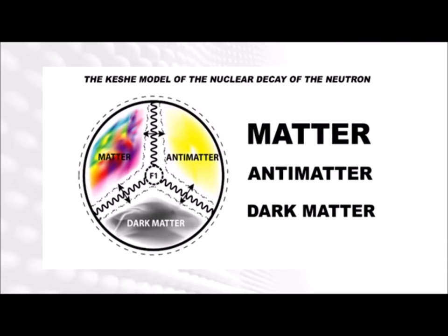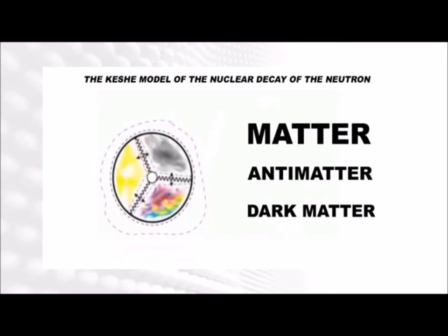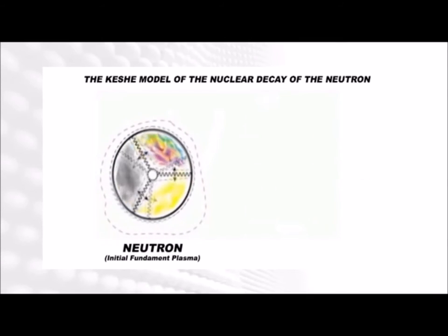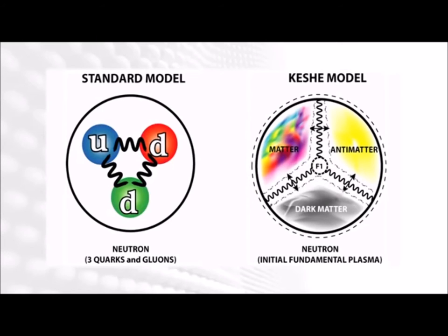The interaction of these three matters results in a larger integrated dynamic system called the initial fundamental plasma or the neutron. The neutron can decay into a proton and electron, with small fragments of the magnetic fields left over as light or energy. Note that this is not the model of physics taught at universities nowadays.